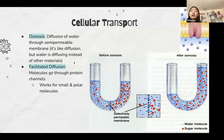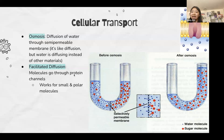Osmosis is the diffusion of water through the semi-permeable membrane. Instead of moving the solute across the membrane, you're moving water across to equalize concentration on both sides by adding more water to one side and removing it from the other. Facilitated diffusion is molecules going through protein channels, and this works for small and polar particles.